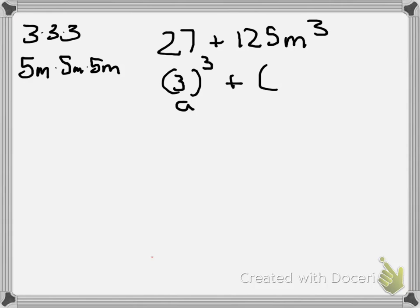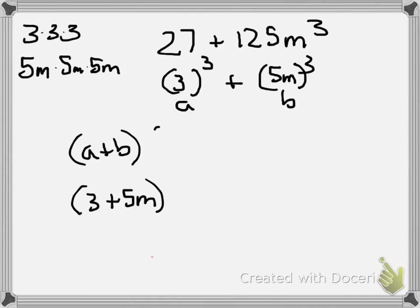Okay, so then our B term is 5m cubed. So now we have our A and our B. And remember, when it's the sum of two cubes, it's A plus B, so the A is 3 and the B is 5m. And then in the trinomial, it's A squared, subtract A times B plus B squared.